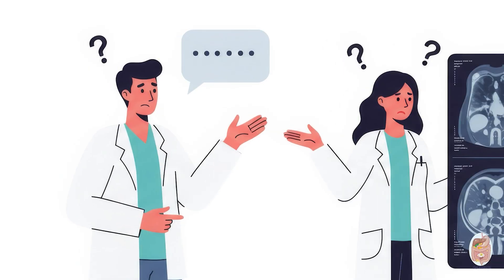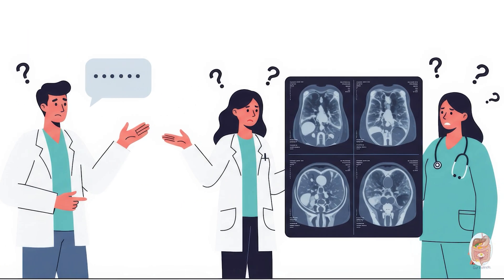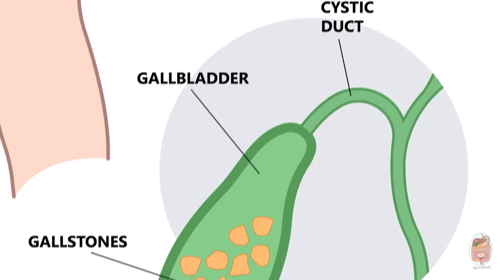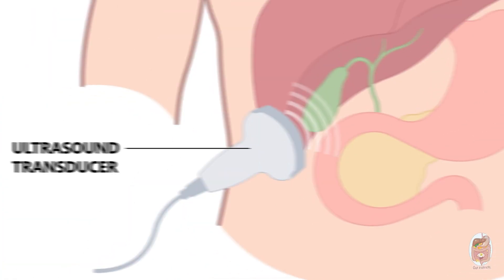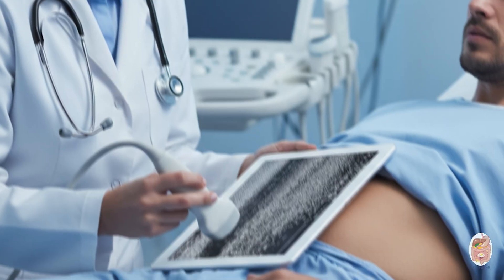Diagnosing functional gallbladder disorder is tricky — it's a diagnosis of exclusion, meaning we rule out everything else first that can cause pain in the upper abdomen. Blood tests, scans, and detailed clinical history must all be carefully reviewed. If the patient develops sludge or tiny stones due to poor gallbladder motility during evaluation, the diagnosis becomes clearer as these abnormalities appear on scans.